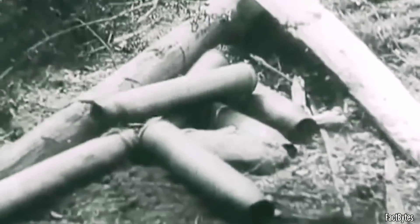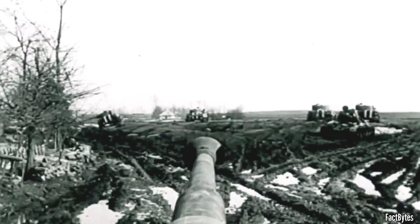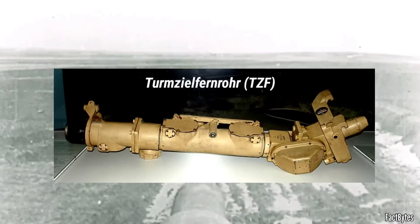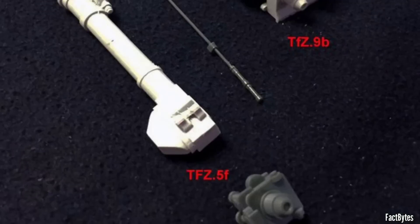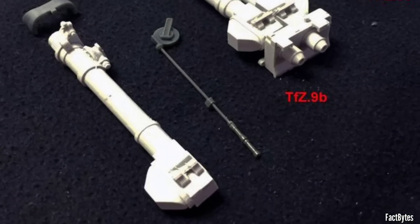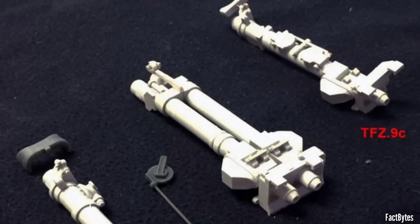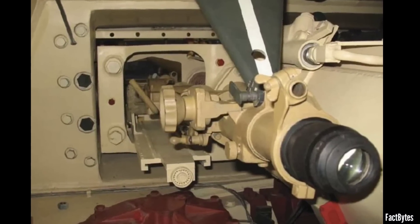The German Panther, Tiger I, and Tiger II tanks boasted exceptional optical sighting instruments for their main gun, known as Turmzielfernrohr or TZF. Over the course of the war, various iterations of the TZF were introduced, each featuring specialized modifications aimed at improving performance.